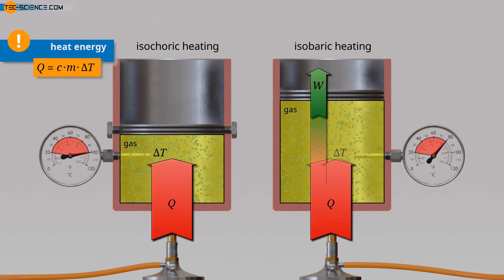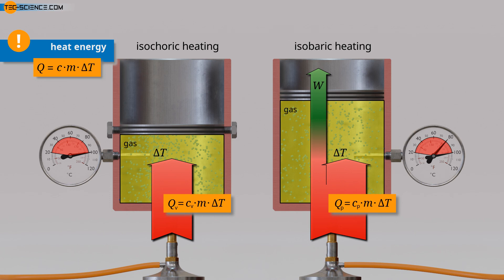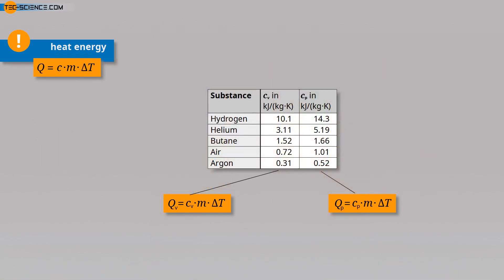In this case, only the difference between the supplied heat and the work done can be used for the temperature increase. For this reason, in the case of isobaric heating, the temperature change is smaller than in the case of isochoric heating if the same heat is supplied in both cases. Therefore, in order to still achieve the same temperature change in an isobaric process, where the volume expands strongly, more heat must be supplied. For this reason, the specific heat capacity of the isobaric process C_P is always greater than that of the isochoric process C_V, since a greater amount of heat is required to achieve a certain change in temperature.